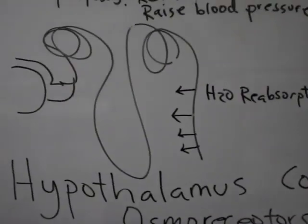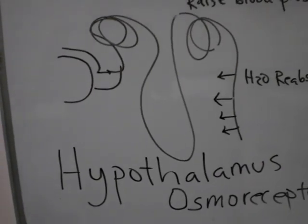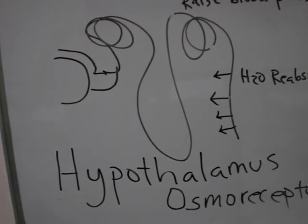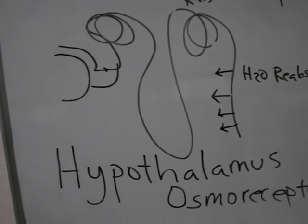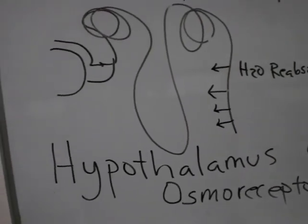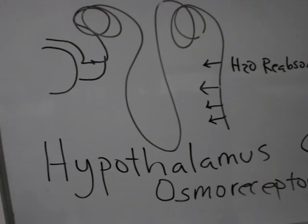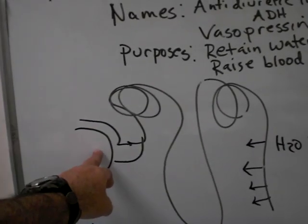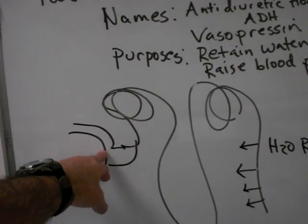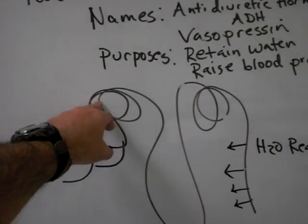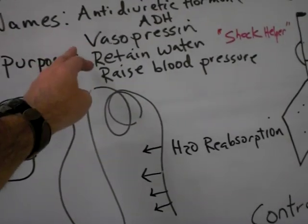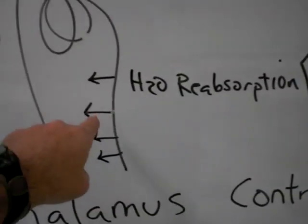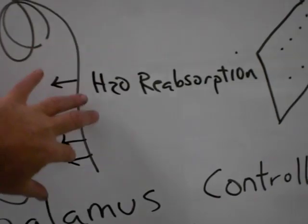What we need to understand about antidiuretic hormone is the nephron. Remember there are a million or so nephrons in each kidney — it's the functional unit of the kidney. In the nephron you have the Bowman's capsule, the proximal convoluted tubule, loop of Henle, distal convoluted tubule, and the collecting duct. This is where the urine is.